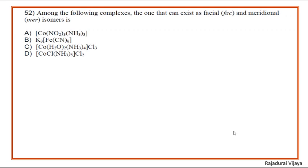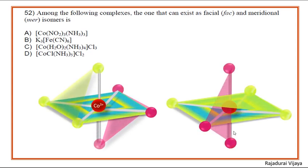Now we come to the question. We have to see which complex belongs to the MA₃B₃ type. The first complex is triamine trinitrito cobalt(III), where the oxidation state of cobalt is 3+. Let us first see the facial isomer of this complex.